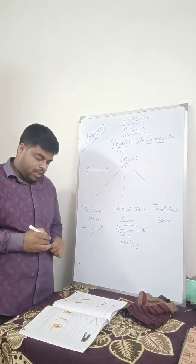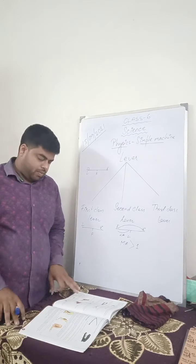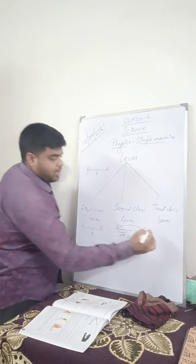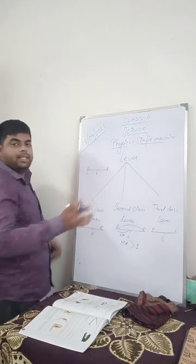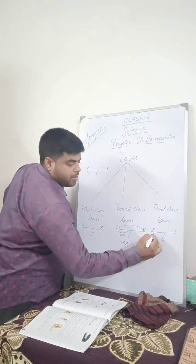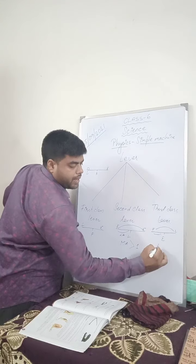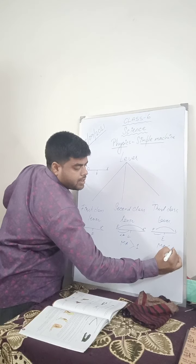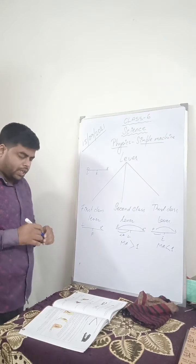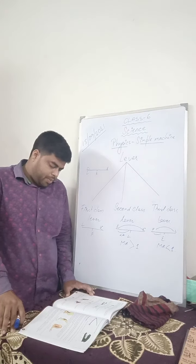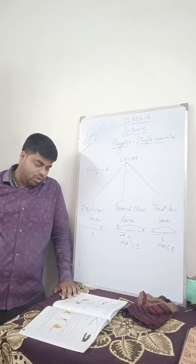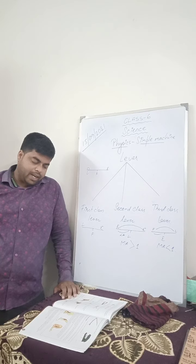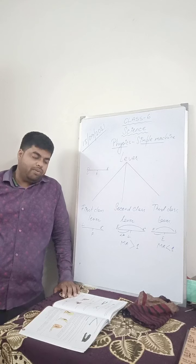Coming to the third class lever — in the third class lever, the effort is in between and the load and fulcrum are on either side. Because the effort arm is always smaller than the load arm, the mechanical advantage will always be less than one. In class III lever, since the load arm is more than the effort arm, the mechanical advantage is less than one. Examples include the tongue, stapler, and forearm.